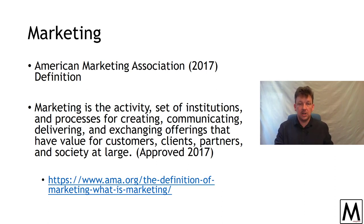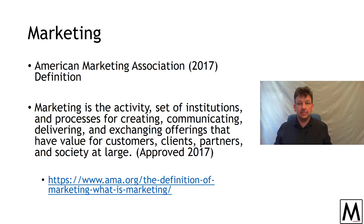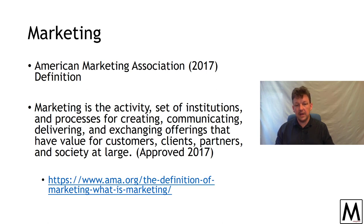The American Marketing Association is the official definition we use for this course. The 2017 American Marketing Association definition: marketing is the activity, set of institutions and processes for creating, communicating, delivering, and exchanging offerings that have value for customers, clients, partners, and society at large. This definition was originally created around 2007, ratified in 2013, reapproved in 2017 — the Americans have liked this one, so they've stuck with it.